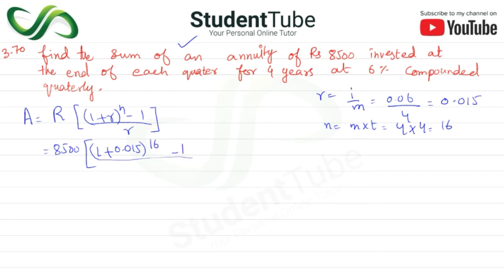So we have 1.268986 minus 1, divided by 0.015. This equals 0.268986 divided by 0.015. Then 8500 multiplied by this result.